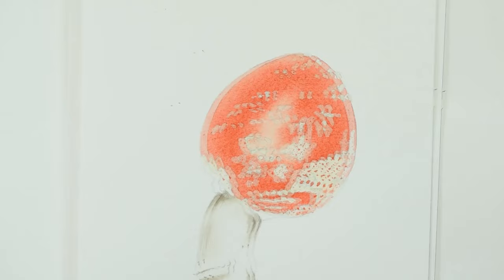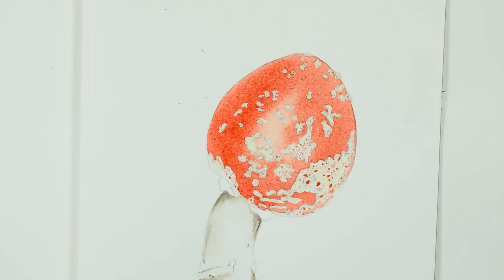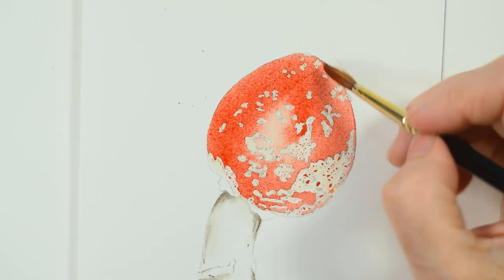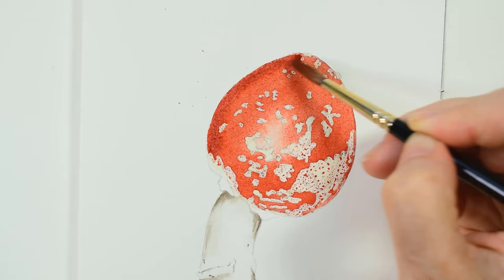Then I add in more paint where I want a deeper red color, and I take a darker color mix to add around the edge.